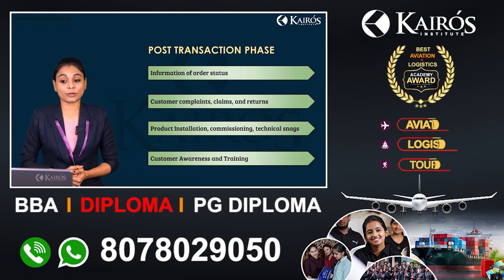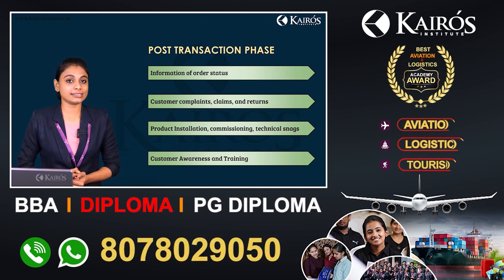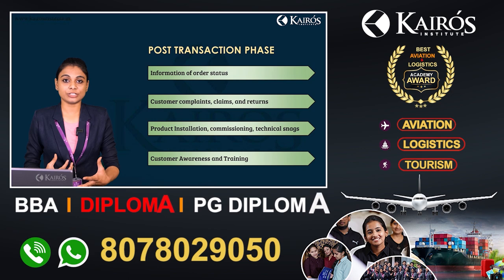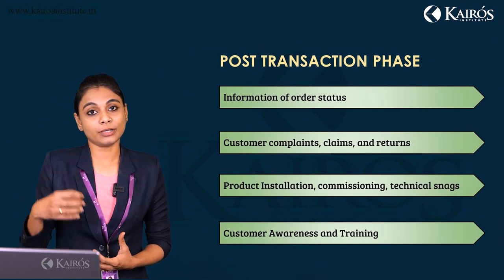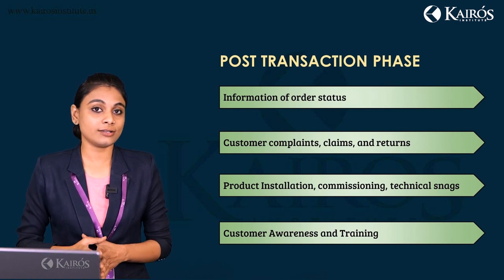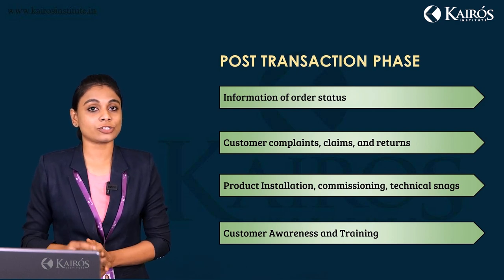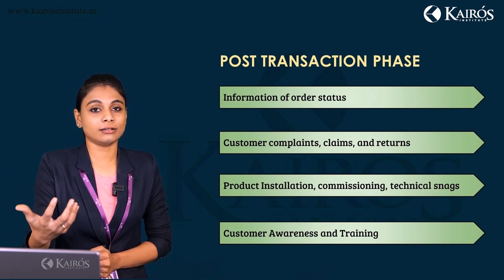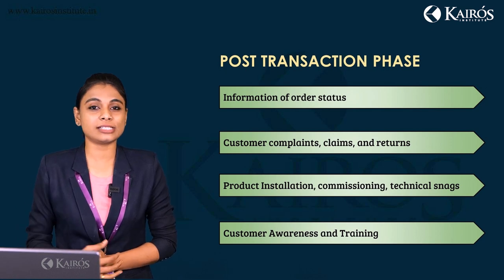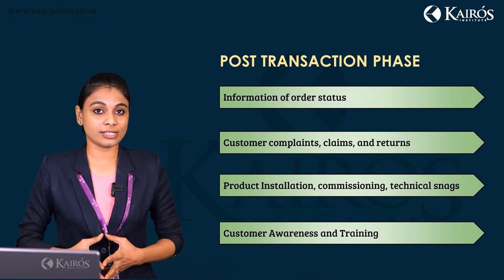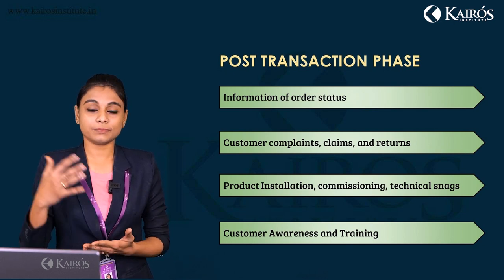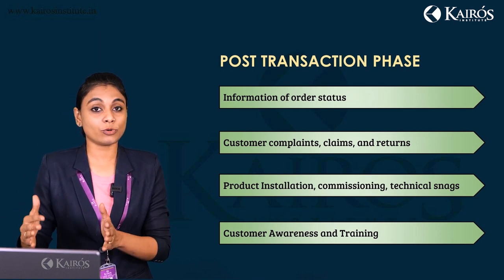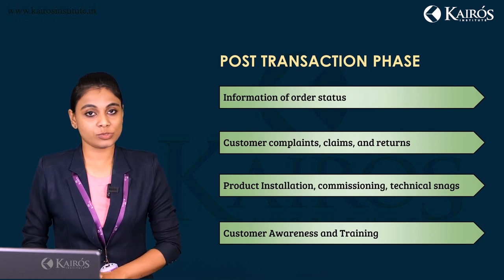The third element is product installation, commissioning, and technical snags. If a customer orders an electronic item such as a TV or washing machine, installation and commissioning also fall under the post-transaction phase. Products like washing machines and air conditioners require periodic servicing, and a company representative comes to perform this service. All such post-sale services come under the post-transaction phase.